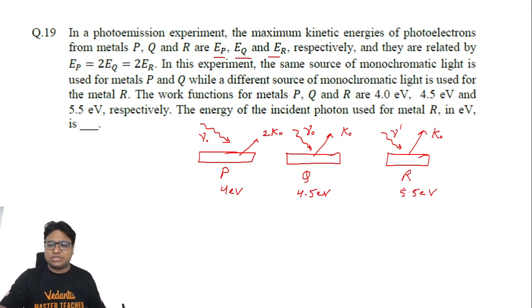Now we want to know the energy of the incident photon used in the metal R. So the energy of this photon is what we want to know. Let's write the applicable equations here.